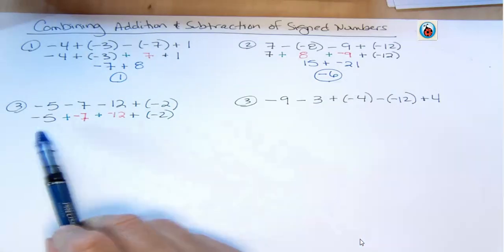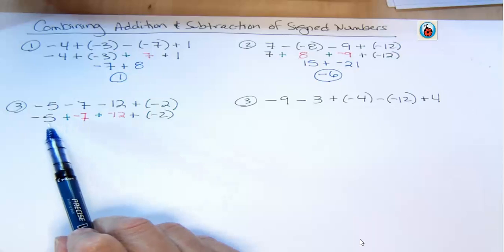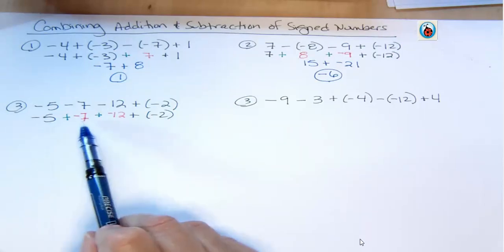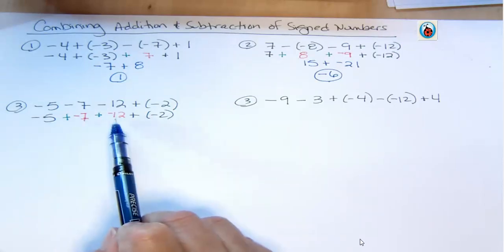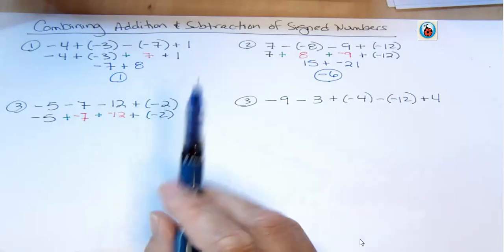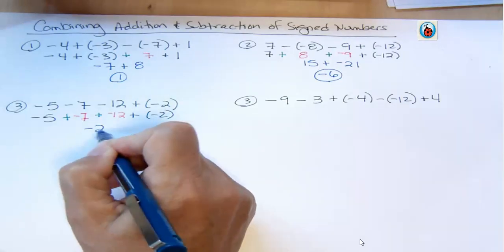Again, if you can't do it in your head, that's fine, but give it a try. Negative 5 and negative 7, that's negative 12. And 12 and 12 is 24. And 2 more is 26. And they're all negative, so it's negative 26.